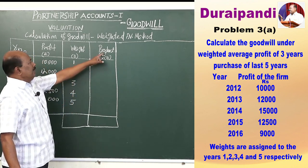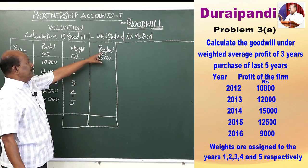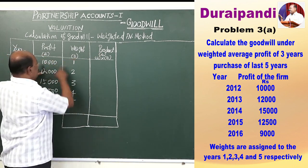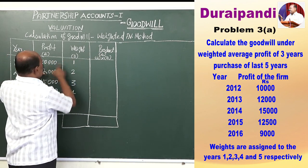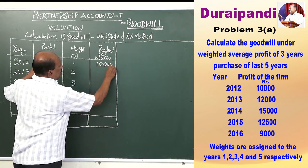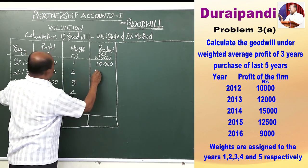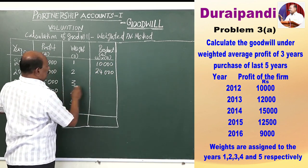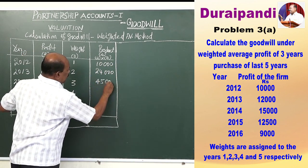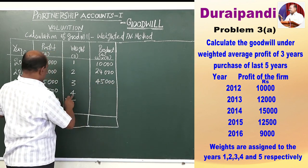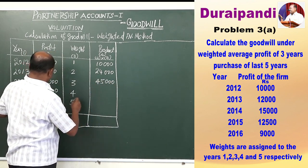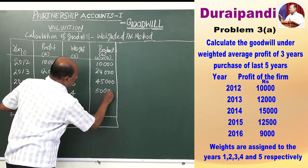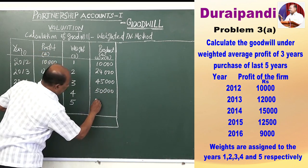We have to obtain the product by multiplying column 2 with column 3. So: 10,000 into 1 equals 10,000; 12,000 into 2 equals 24,000; 15,000 into 3 equals 45,000; 4 into 12,500 equals 50,000; and 5 into 9,000 equals 45,000.